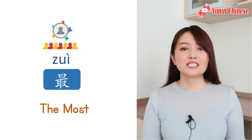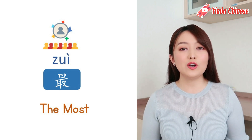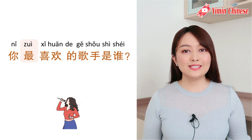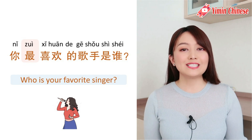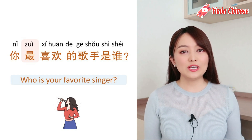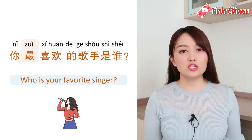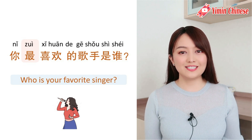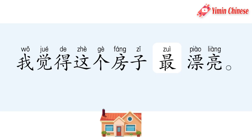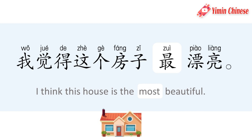第二个, the most, is 最. 比如说,你最喜欢的歌手是谁? Who is the singer you like the most? 歌手 is singer. 或者 我觉得这个房子最漂亮。I think this house is the most beautiful.